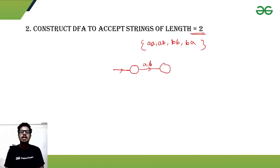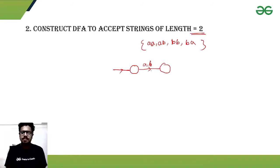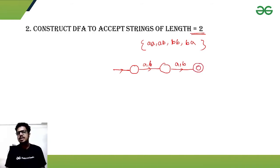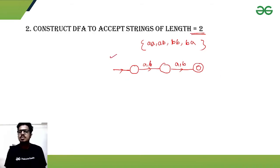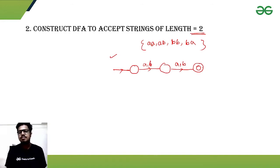Getting a single symbol 'a' or 'b' moves us to an intermediate state, signifying length-1 is seen. Then getting another symbol brings us to the final state, meaning the string length is exactly 2. However, this construction is not yet a DFA — it's an NFA — because we don't know what happens if 'a' or 'b' is received again in the final state.